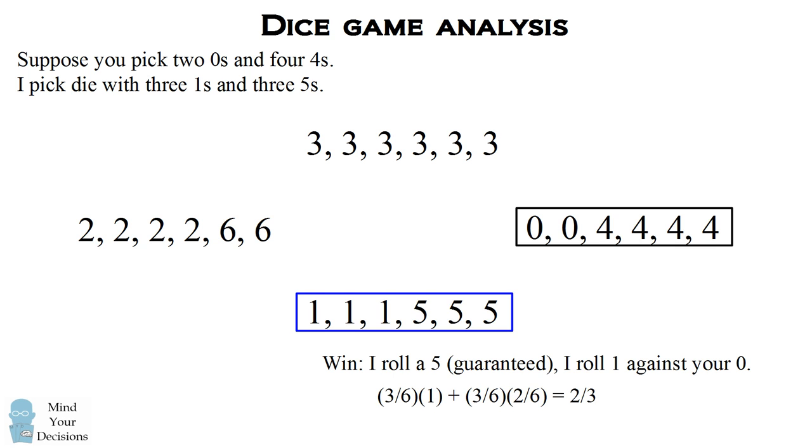So in summary, I'm going to win three six times one when I roll a five, plus three six when I roll a one, times two six when you roll a zero. So this nets out to two-thirds of the time I'm going to win. So once again, your die that you pick is going to lose to my die two-thirds of the time.